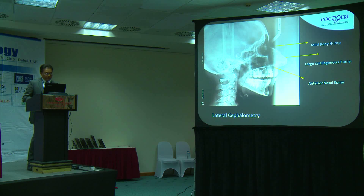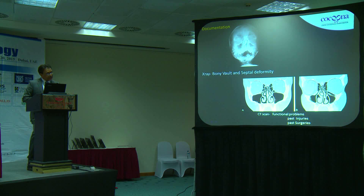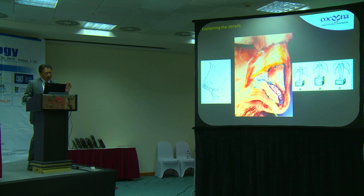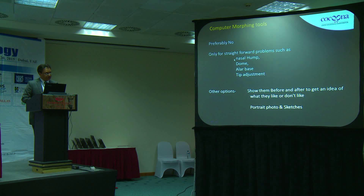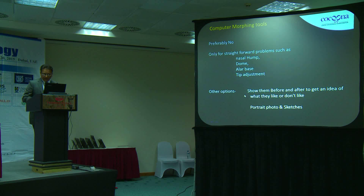Many of these patients undergo lateral cephalometry, which gives us an analysis of bone and soft tissue to understand how much bone reduction they would need. Rarely, we do x-rays and CT scans if there are functional problems or in cases of secondary deformities or revision rhinoplasty. We use a lot of training and teaching material to explain to the patient what can be done, what cannot be done, and the consequences of altering a lot of nasal structure. Computer morphing is often demanded by patients; preferably we don't do it, but in selective situations we can — it helps educate patients about nasal hump, dome problems, or LR base issues.